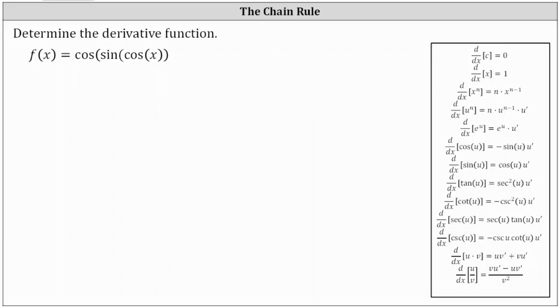We want to determine the derivative of the given function f of x equals cosine of sine of cosine x. Notice how f of x is a composition of three trig functions, and therefore we'll have to apply the chain rule to find the derivative function.